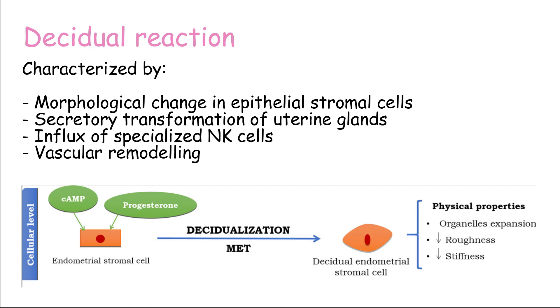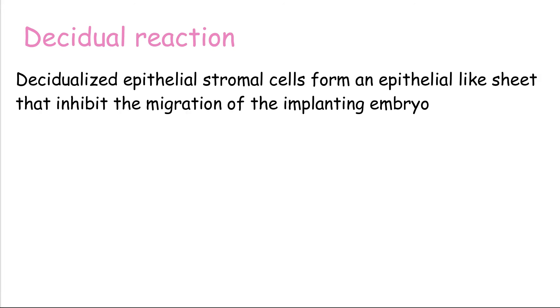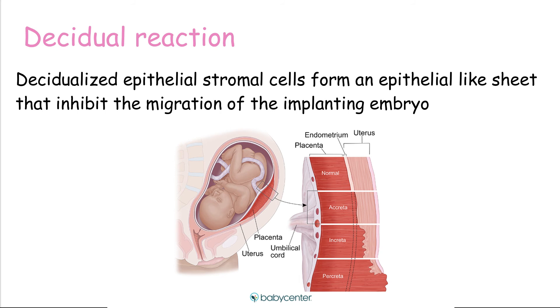Decidualized epithelial stromal cells provide nutrition to the growing conceptus, but also form an epithelial-like sheet with adhesive junctions that inhibit the migration of the implanting embryo. Decidualization allows a regulated invasion of the embryo, preventing conditions such as placenta increta or percreta — where the placenta invades too much, potentially reaching the myometrium — which poses a threat to both baby and mother, especially during labor, where it can be associated with hemorrhage. An appropriate decidual reaction will prevent these conditions.